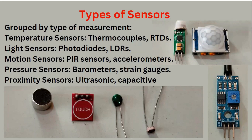Types of sensors: sensors are grouped by the type of measurements being taken. Temperature sensors are thermocouples and RTDs. Light sensors include photodiodes and LDR. I will show you the LDR part — we have done practicals on this previously, and I will try to show you in the lab also. Photodiodes, also called IR diodes or receivers, fall in this category.